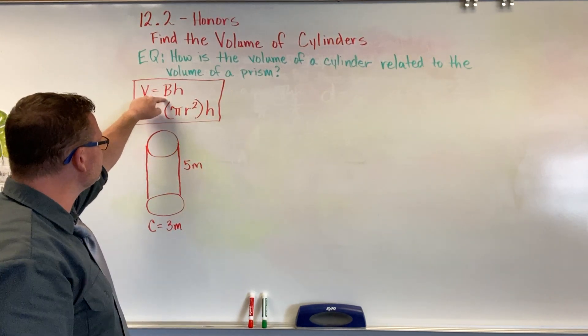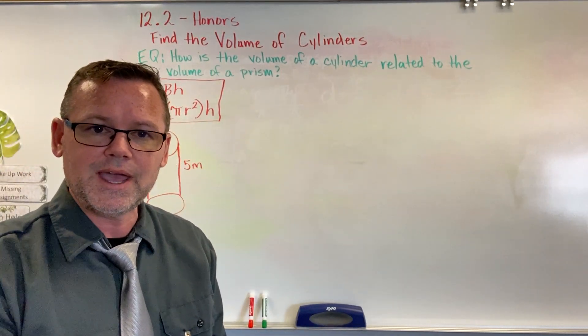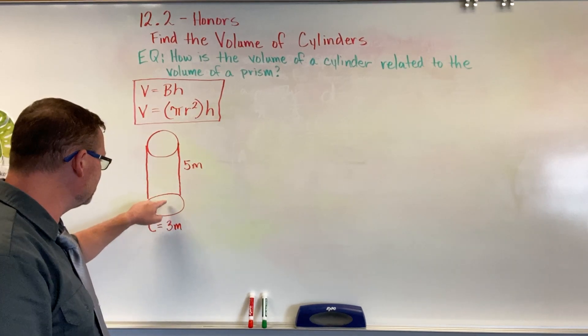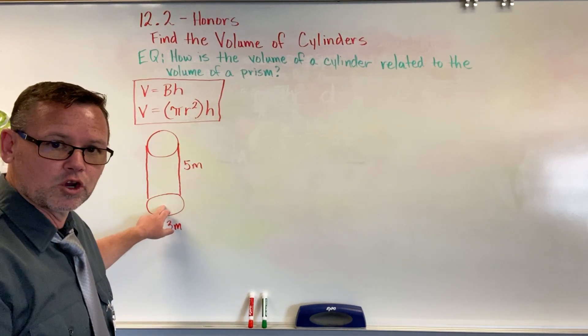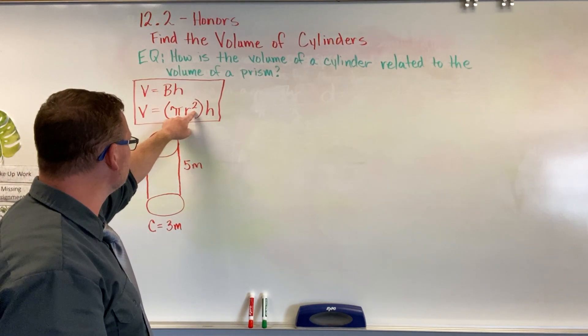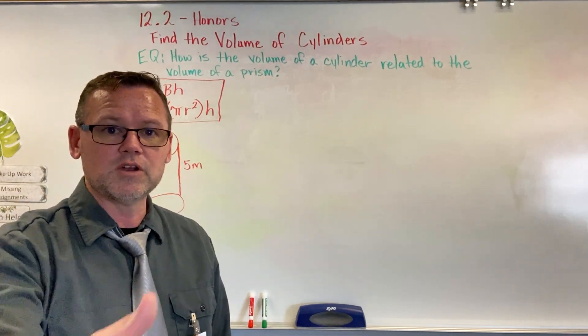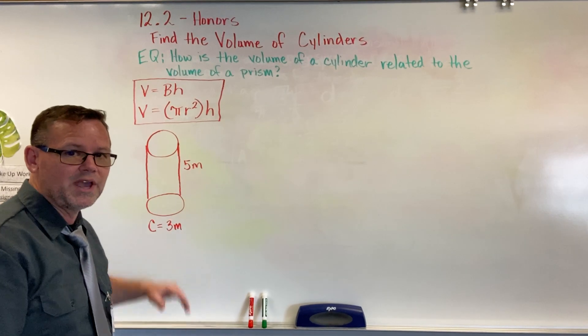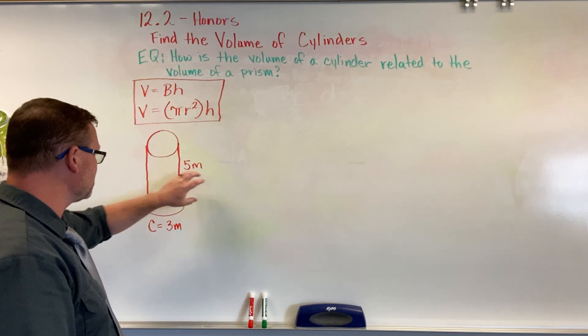Now remember, the volume equals base times height. The base is capitalized because we're always going to substitute in whatever formula we need depending on the shape of the base. In this case, the shape of the base is a circle. So, we know the area of a circle is pi multiplied by radius squared. In other words, I have to substitute πr² in for the base, and we're still going to multiply it by the height. Now, we've done this before, but here's the tough part. They gave you the circumference of the base. So, we actually have to find that radius first before we can figure out the area of this base and multiply it by the height.